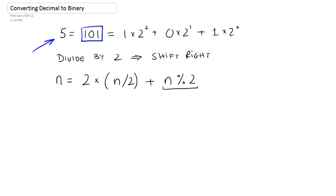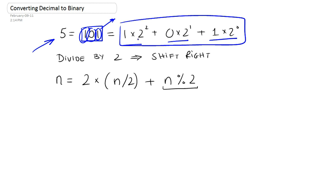What this is telling us is that to get the number 5, you multiply 1 by 2 to the 0, multiply this 0 by 2 to the 1, multiply that 1 by 2 to the 2, add these powers of 2, and you'll get your number 5. This is basically what it's telling us.